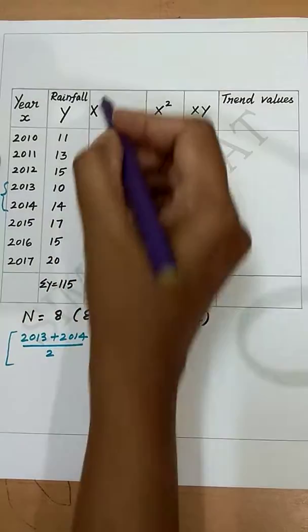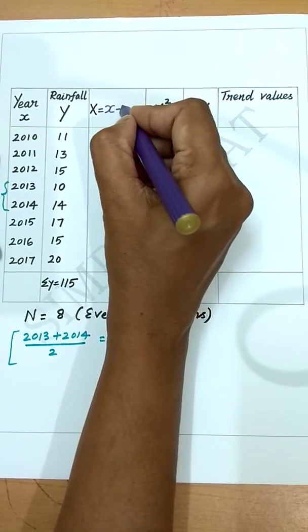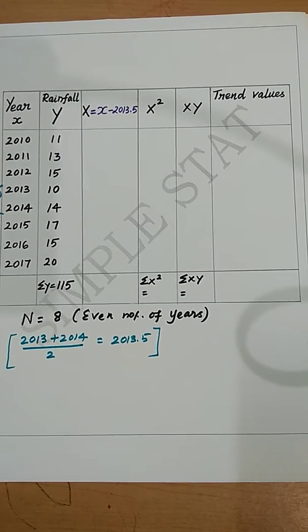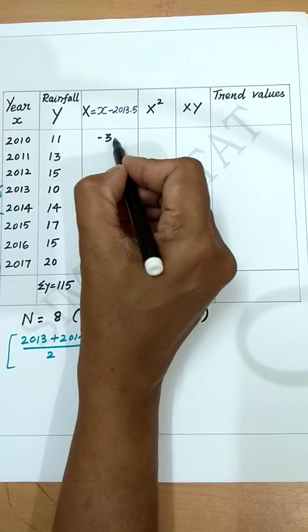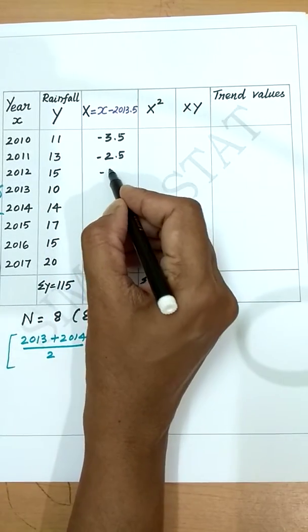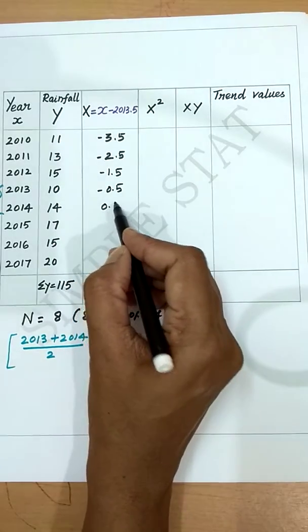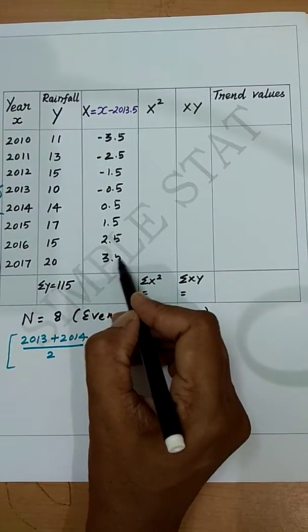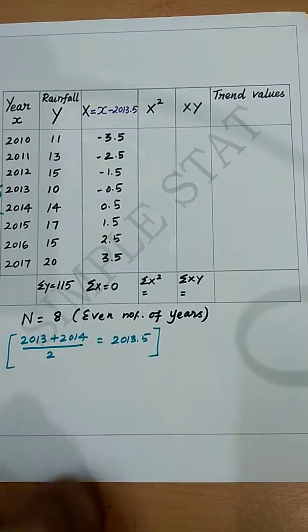So capital X = x − 2013.5. The X values are: 2010 − 2013.5 = −3.5, then −2.5, −1.5, −0.5, 0.5, 1.5, 2.5, and 3.5. Adding all these values, we get summation X = 0.